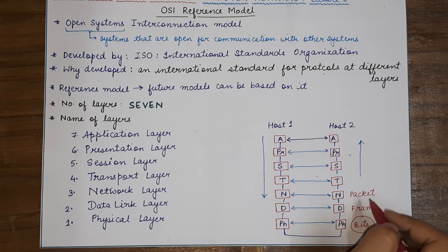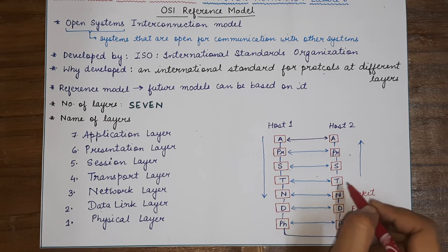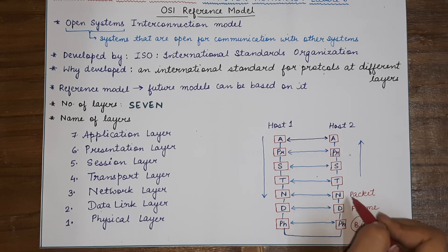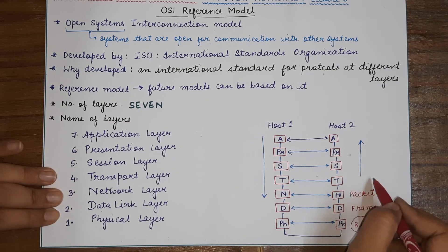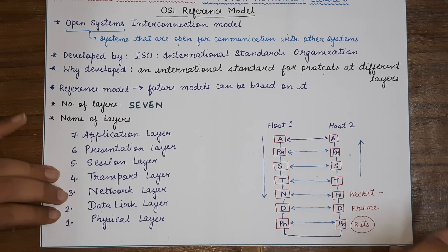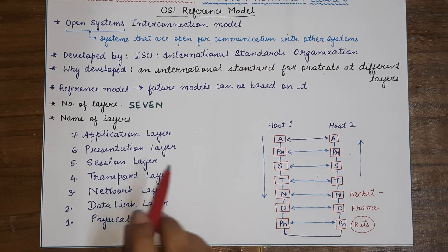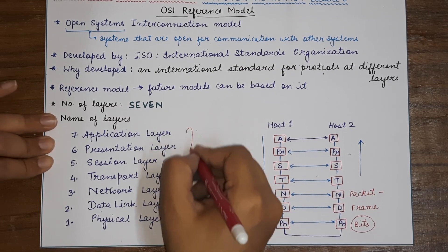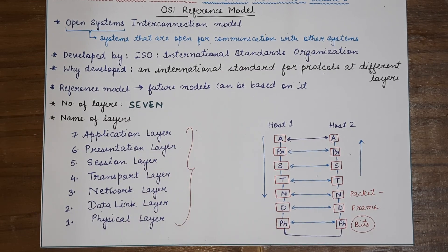Each of these is known as a data unit. The Transport layer has its own data unit, different from the Network layer's packet — the headers make the difference. This was the generic introduction to the OSI reference model. In the next video, we will study in detail the functionalities of each of these layers. Stay tuned to understand the OSI reference model in full detail. Thank you for watching — till we meet in the next video.